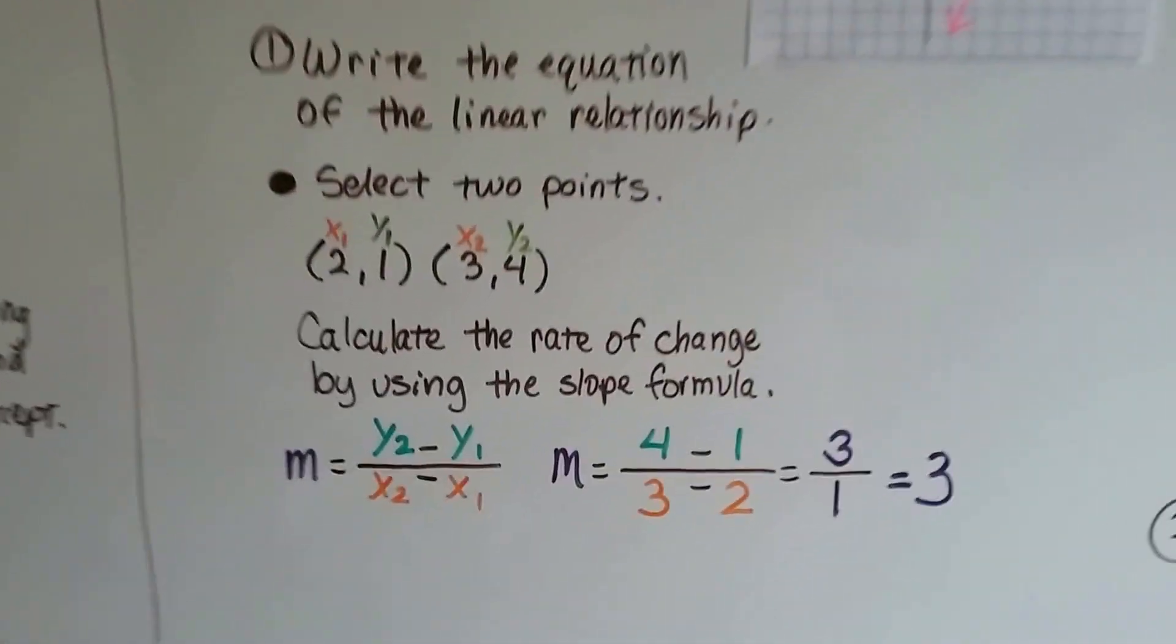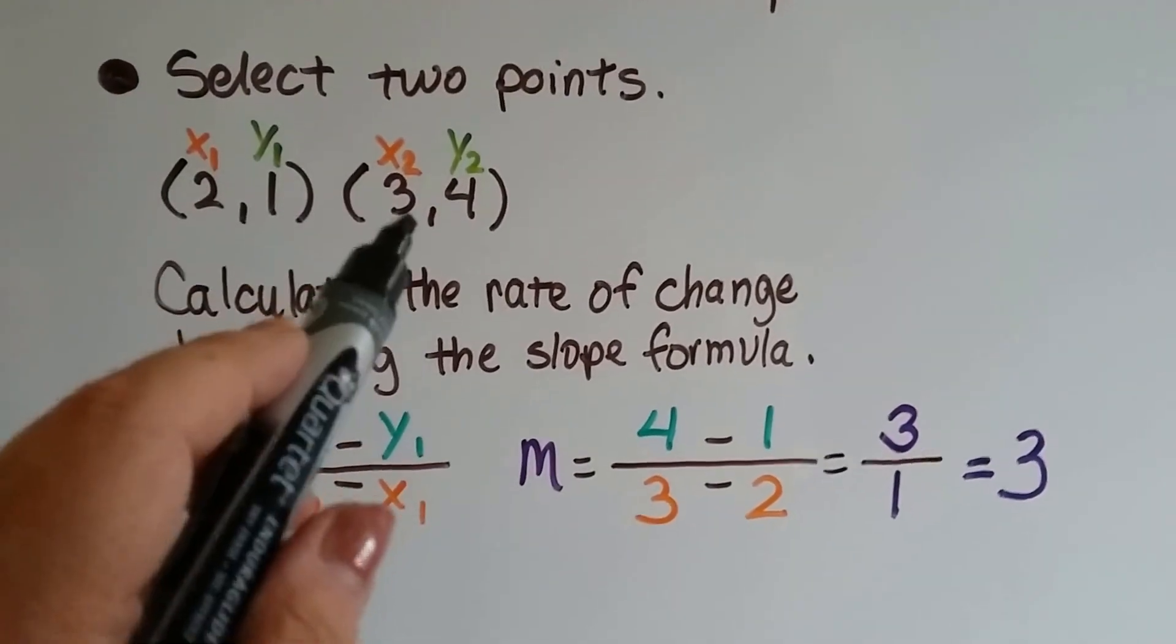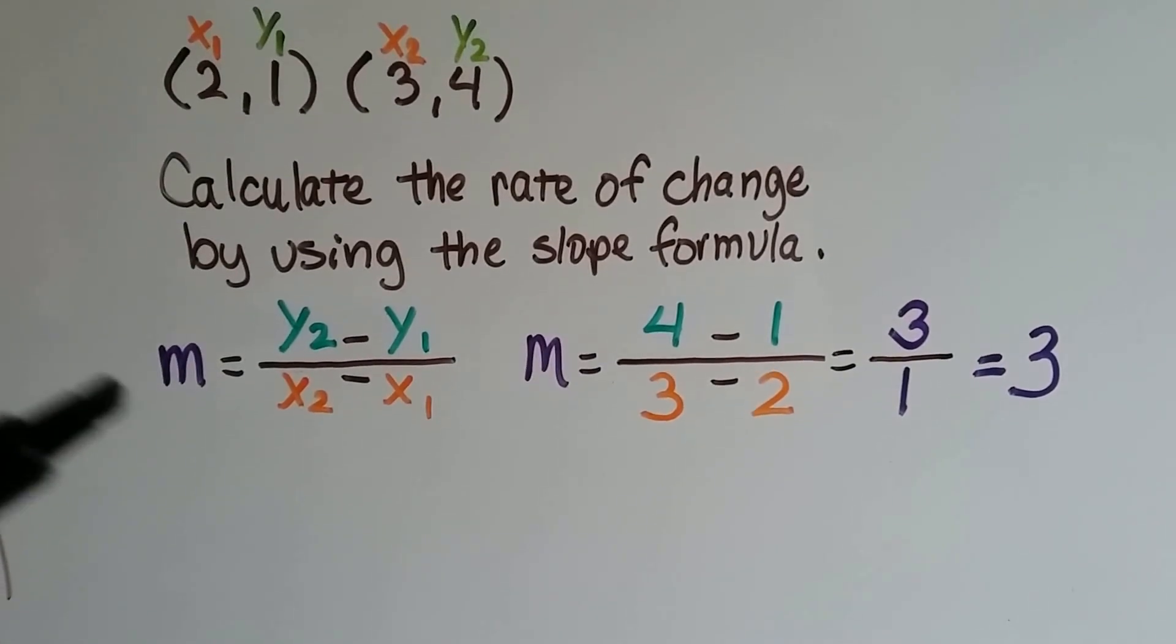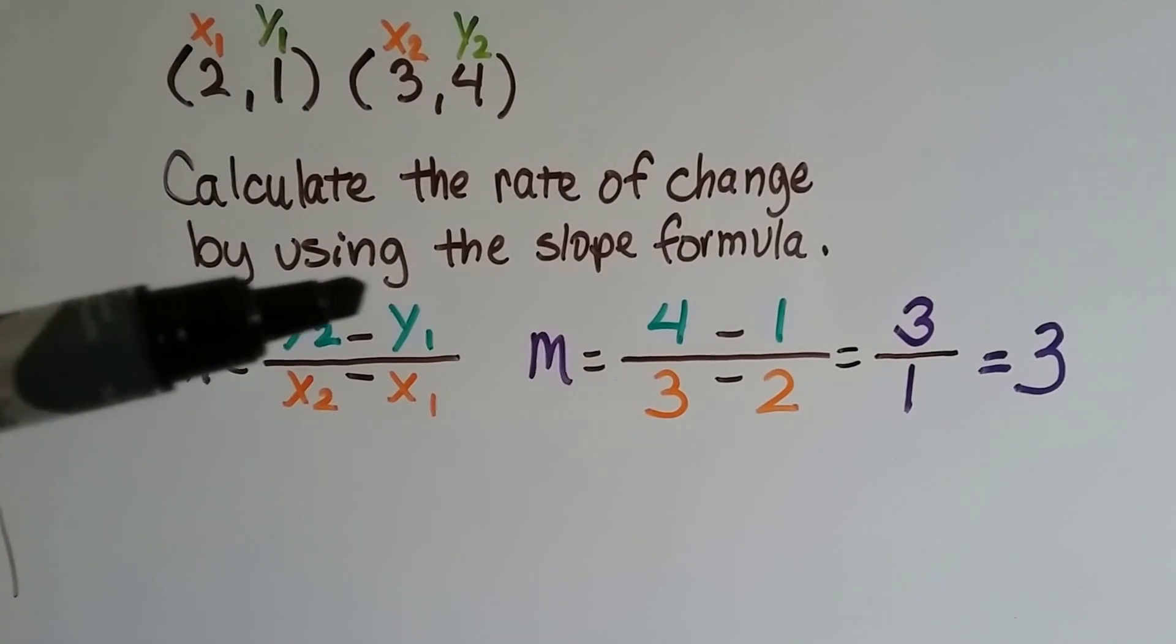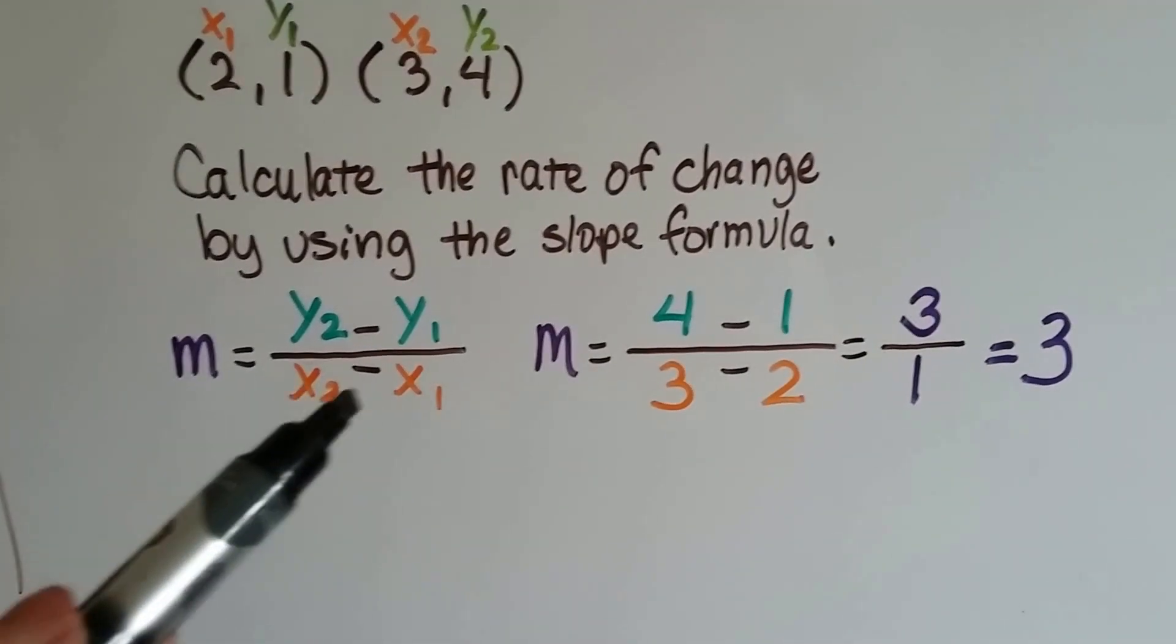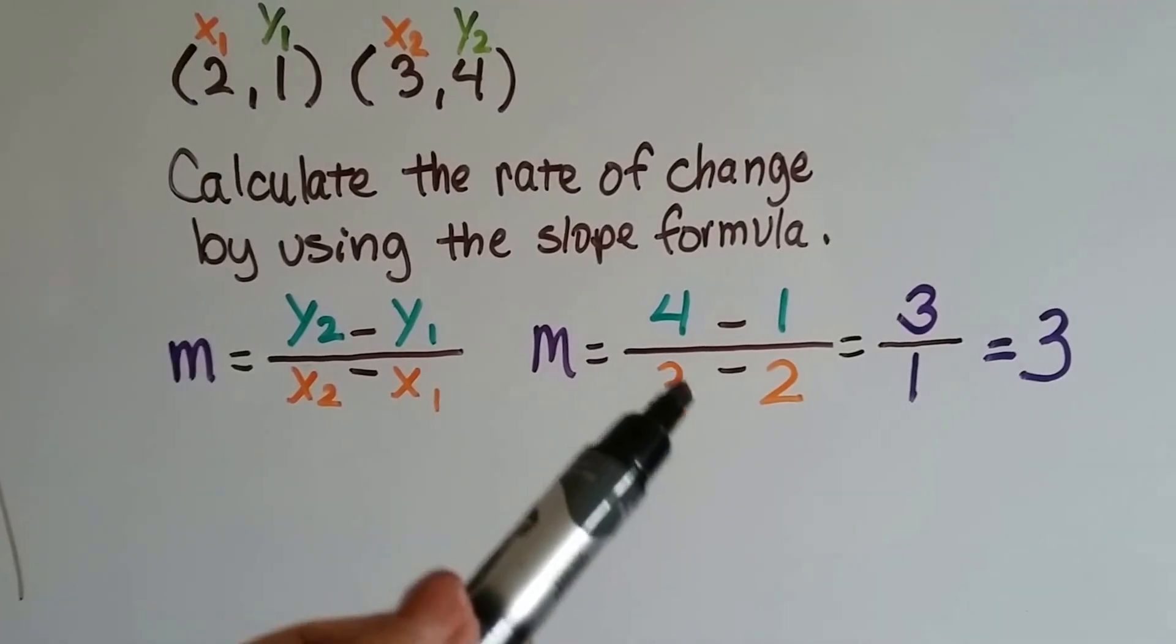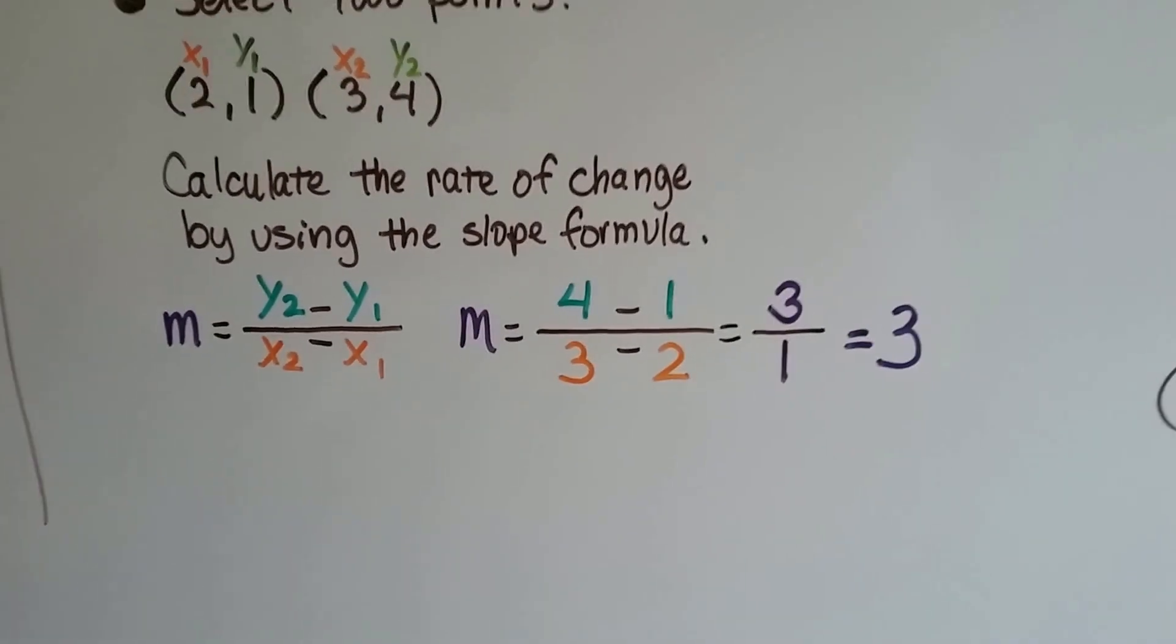So I chose 2, 1, and then 3, 4. It doesn't matter how steep the line is. You can still see left to right, can't you? So we've got 2, 1, and 3, 4 as our points. That's x1, y1, and x2, y2. And we're going to calculate the rate of change and find the slope by using the slope formula. So here's our y2 take away y1. So we have 4 take away 1. 4 take away 1 is 3. Then we have x2 take away x1. So we've got 3 take away 2. Well, 3 take away 2 is 1. And 3 over 1 equals 3. So now we know our slope is 3.